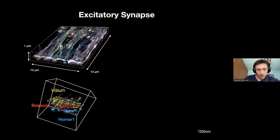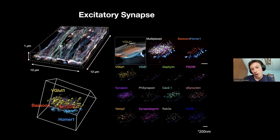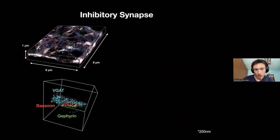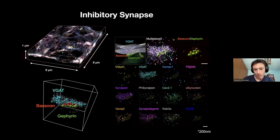Here we have a single excitatory synapse with all the different channels, showing single molecule resolution for all channels. VGluT1 is highly pronounced in the excitatory synapse, while VGAT shows almost no signal, and Gephyrin is also absent. In the inhibitory synapse it's vice versa — only sparse signal for VGluT1 and highly localized signal for VGAT.